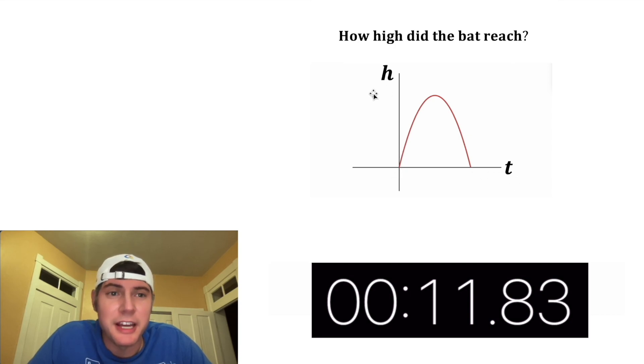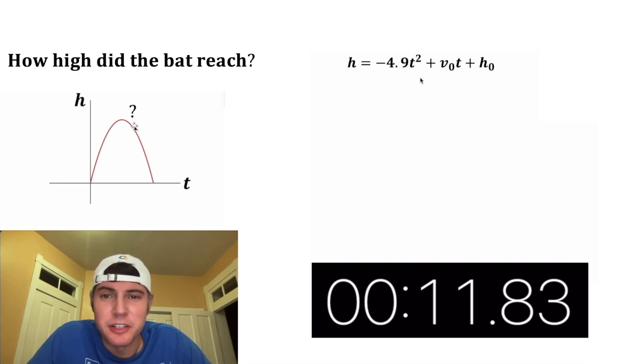So we're interested in this point right here: how high did the bat reach? This is the formula we're going to use: the height is equal to -4.9t² plus the initial velocity times time plus the initial height. So we'll call the initial height zero because the top of the bat is really close to the ground as he throws it.